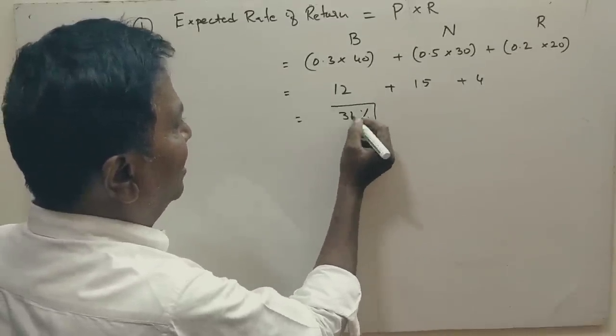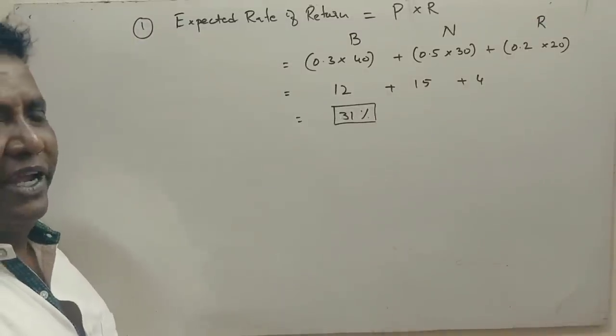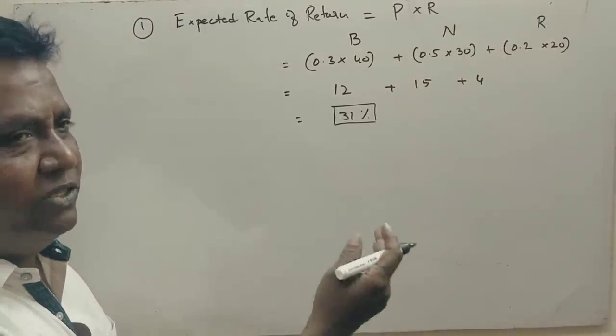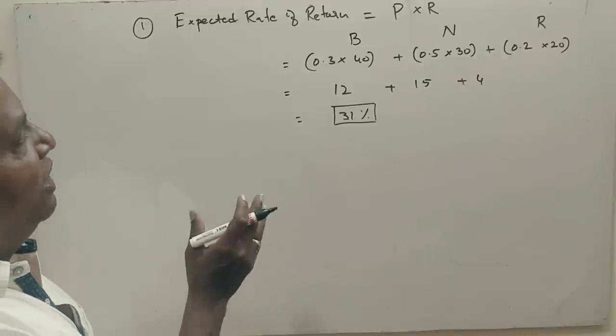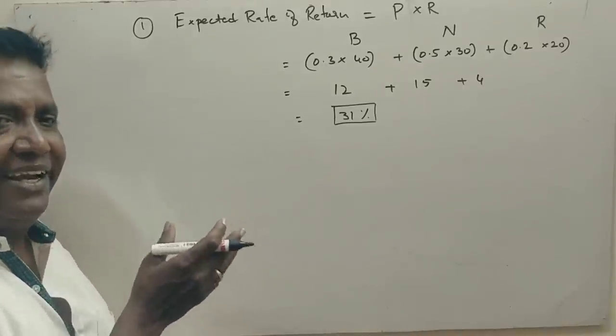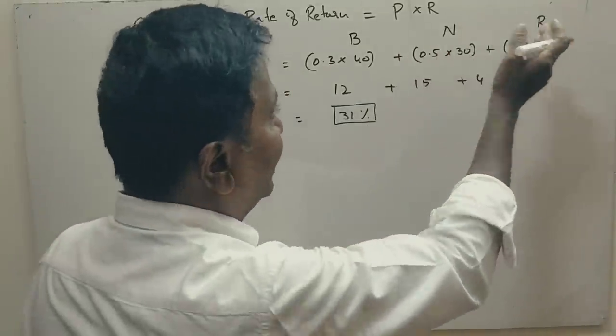So, 31% is the expected return on your investments in all the 3 situations or in all the 3 economic conditions. This is how we have to calculate expected rate return when there is a boom, when there is a normal, when there is a recession.